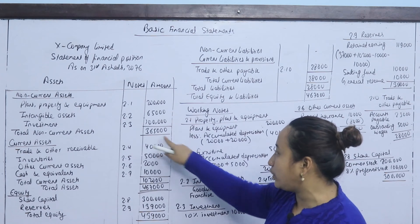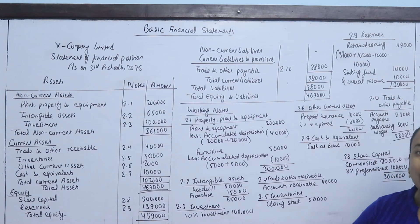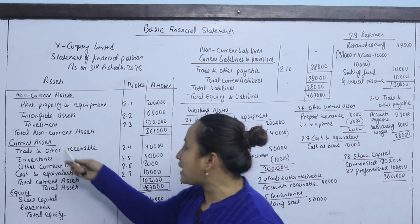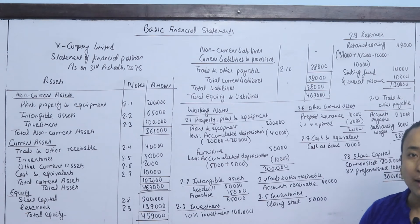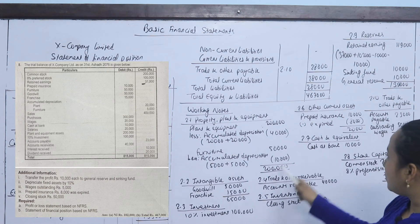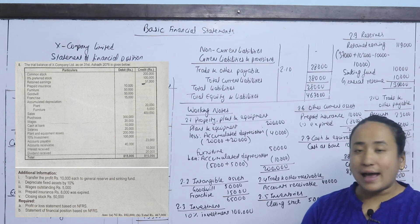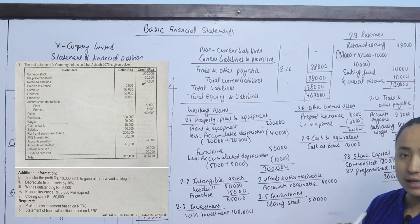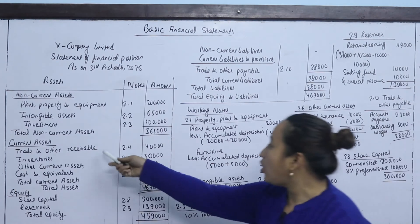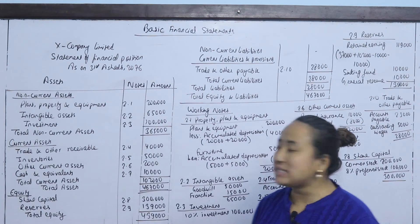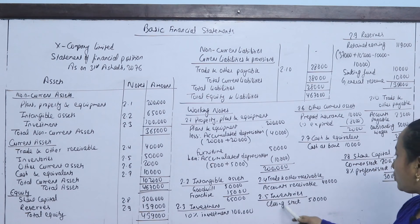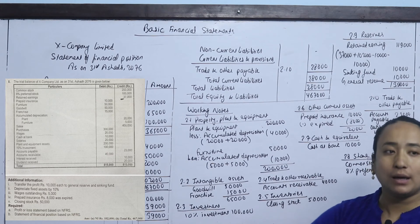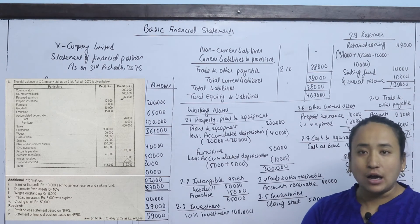Total non-current assets is 3,65,000. These are assets of more than one year. Current assets, working note 2.4, covers trade and other receivables. Trade and other receivables includes accounts receivable, bills receivable, and other receivables. Accounts receivable from the trial balance is 40,000. Inventories include closing stock of 50,000 and office supplies on hand.